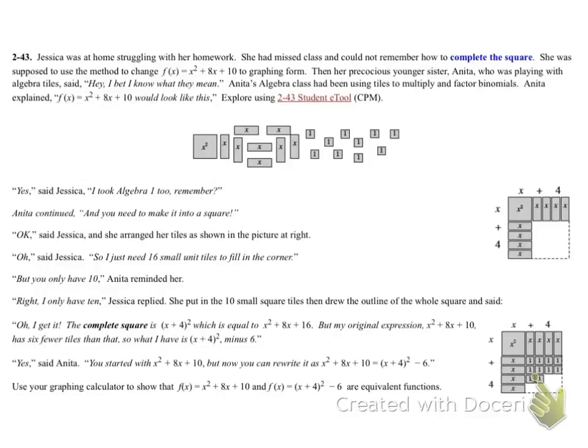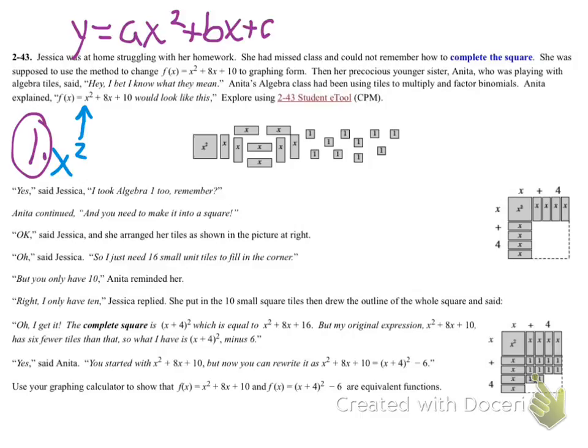We're taking a look at completing the square when our a value is 1. So if we take a look at our function here, we have x squared plus 8x plus 10. The number that is multiplying the x squared is actually a 1. We don't have to show the 1 because 1 times x squared is just x squared. But that is our a value when we're looking at the standard form of a quadratic. So the a value here is 1 for this problem.